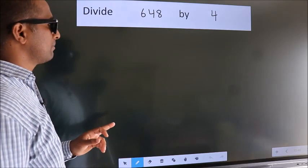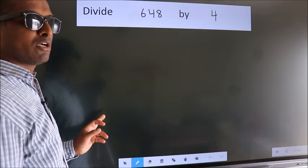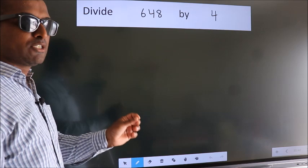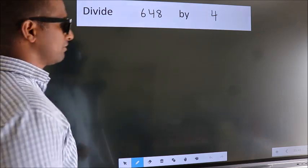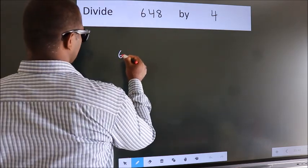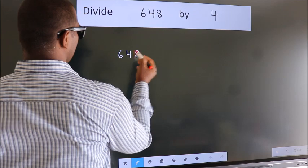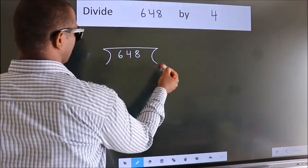Divide 648 by 4. To do this division, we should frame it in this way: 648 here, 4 here.